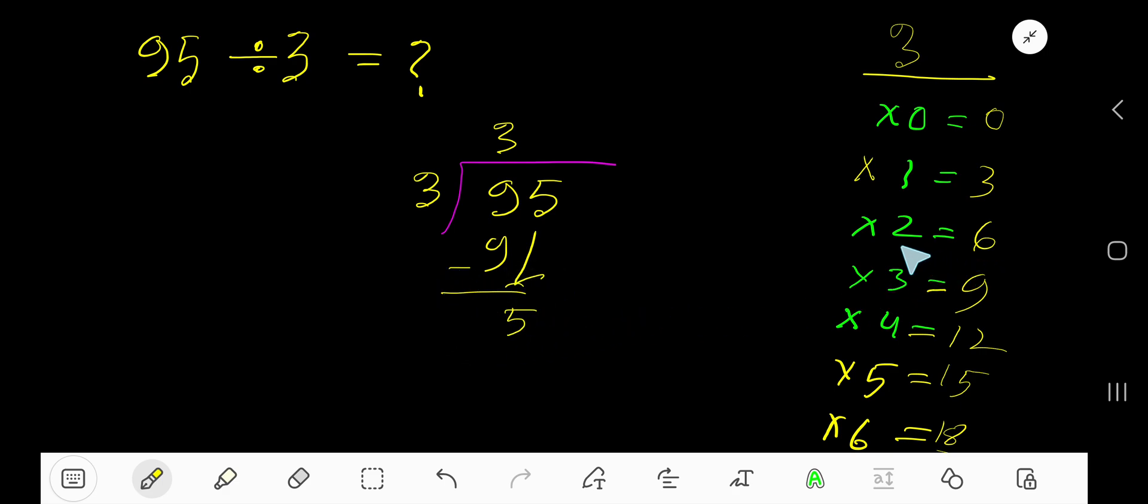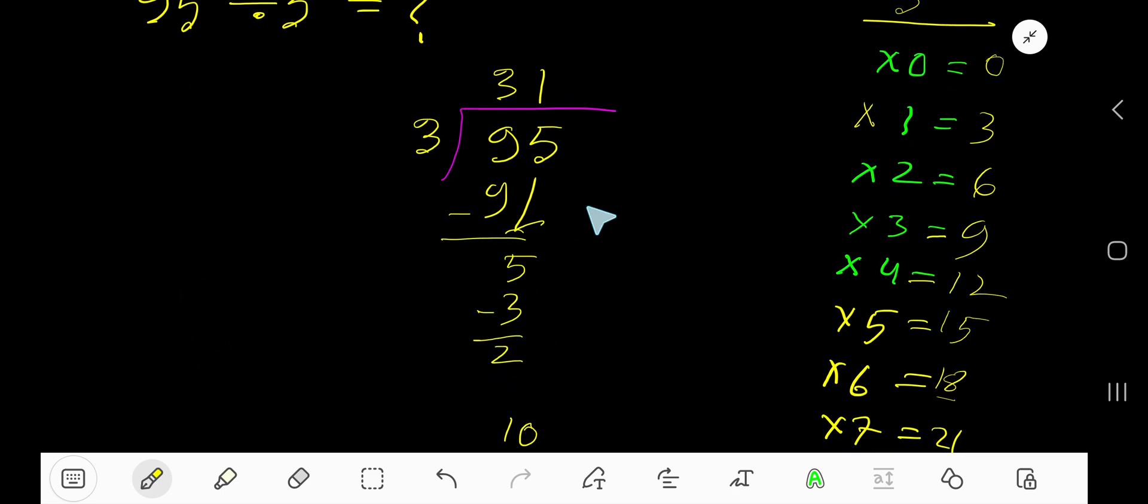3 goes into 5 how many times? 3 times 2, 6, which is greater. So 1 times. 1 times 3, 3. Subtract 2. So our answer is 31, remainder 2.